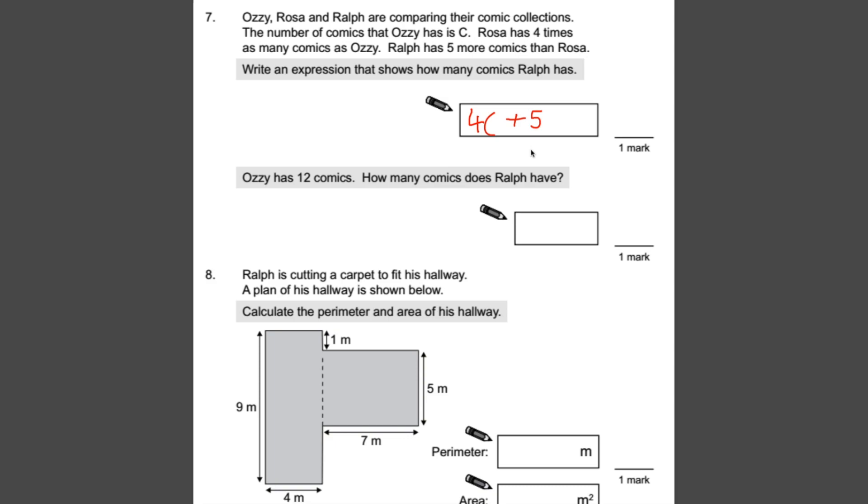Ozzy has 12 comics. How many comics does Ralph have? So all we need to do now is use the expression that we've got. This tells us how many comics Ralph has got in relation to Ozzy, because he's got C. So if Ozzy has 12, all we need to do is substitute the number 12 where our letter C is. So four C is the same as four times C. So if C is 12, four times 12 is 48, plus five is 53.